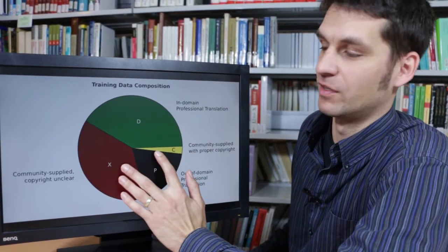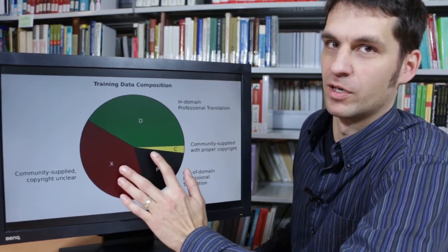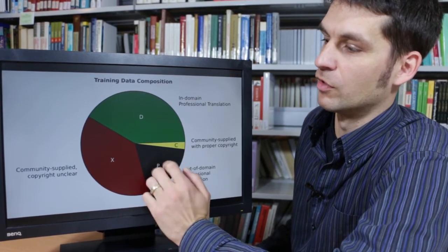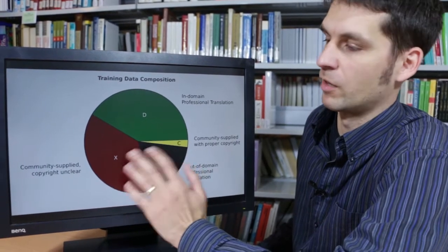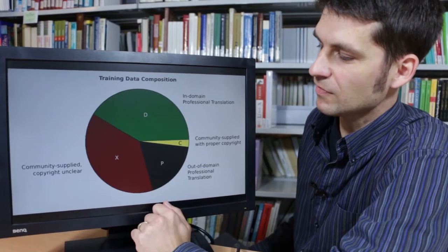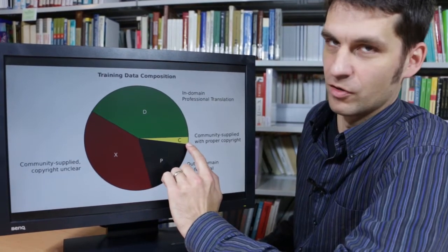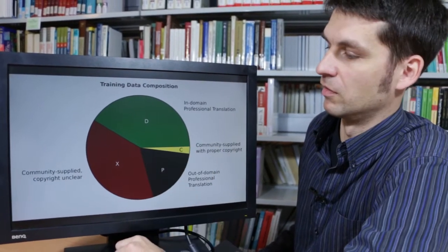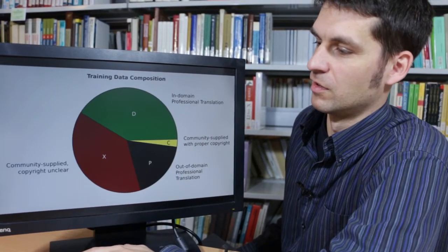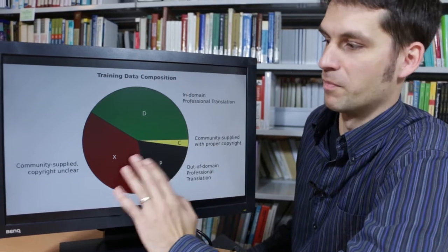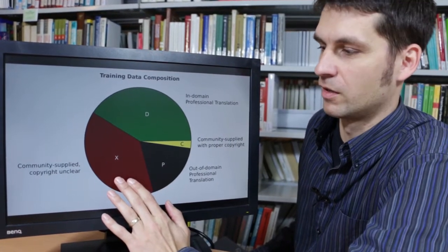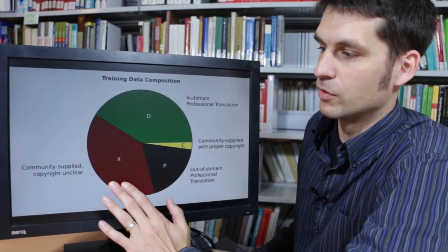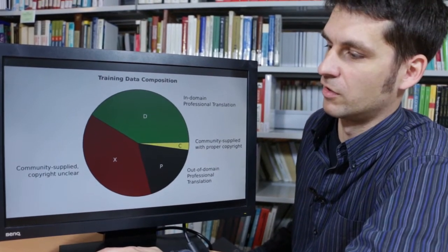The other two parts of the training data were supplied by the community. So these were volunteers and sometimes they were even not native speakers of the target language they were translating into. A very small fragment of the corpus was community supplied. We were allowed to use it and we knew that we were allowed to use it. While the other part, the major part of what the community supplied, had very unclear copyright conditions. So no one knew whether we were allowed to use the text or not.